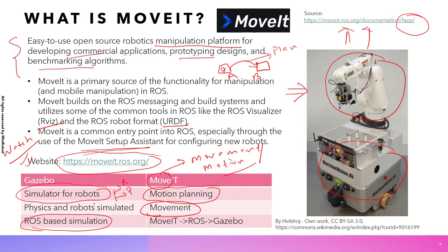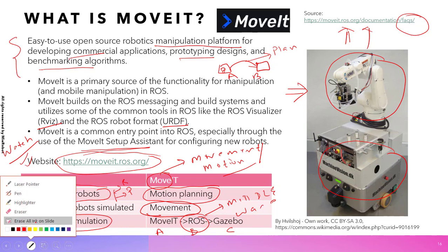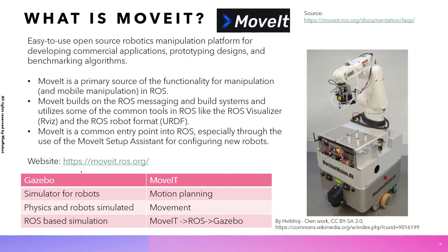MoveIt talks with ROS, and then you have Gazebo — so ROS here acts as a middleware between Gazebo and MoveIt. It's not an apple-to-apple comparison: both serve completely different purposes. One is a simulator and the other is used for motion planning.